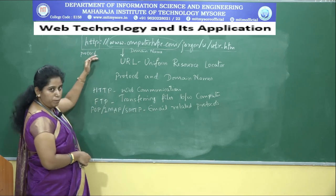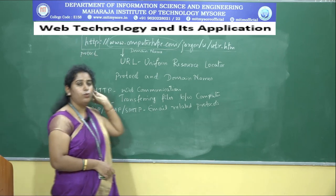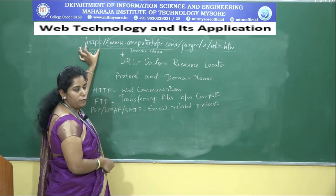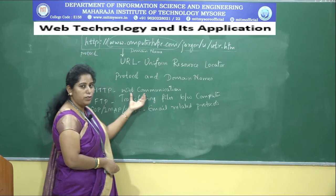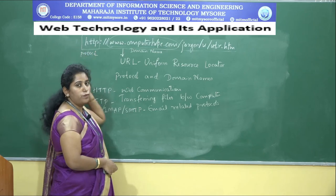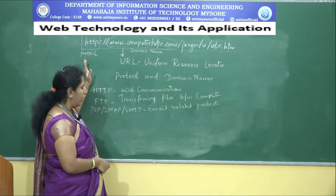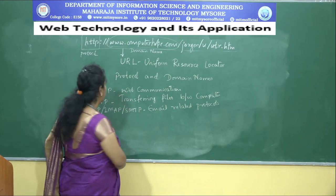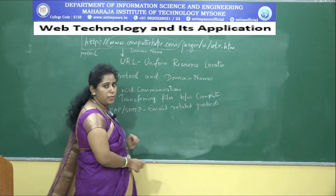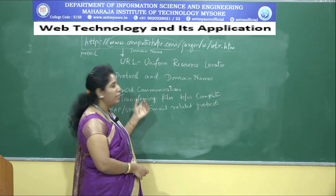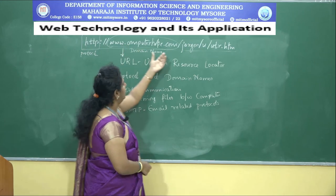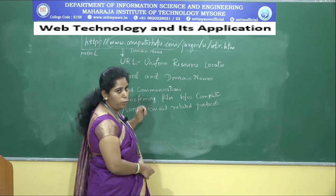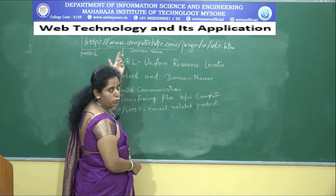Coming back to the URL example, you can notice that the first part is the protocol — here it is HTTP for web communication; if it were FTP, it would be used for file sharing. The two components — protocol and domain name — are separated by a colon and two forward slashes. The domain name part includes: the top level domain (e.g., .com for commercial), the second level domain (e.g., 'computerhope'), and the third level domain (e.g., 'www' for World Wide Web).